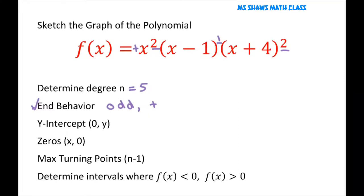Let's go ahead and fill out our y-intercept. That's where our x is 0. So if you plug in 0 for every x, you get 0 times negative 16, that's going to give you 0. So 0, 0.